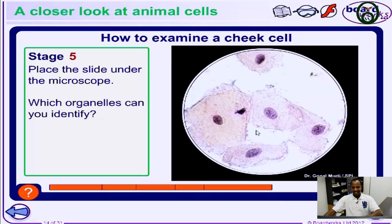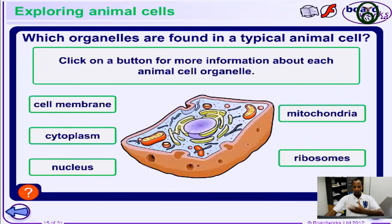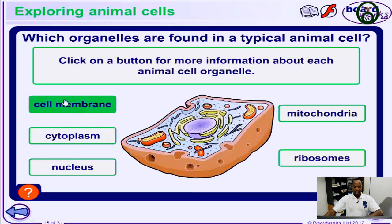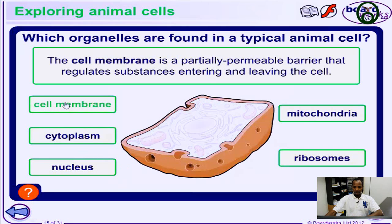These are the cells in your body. All of these are the specialized cells in your cheek that we're taking a look at using a microscope right now. Now let's move ahead and look at the animal cells. If you take a look at what they contain individually, this is the cell membrane.